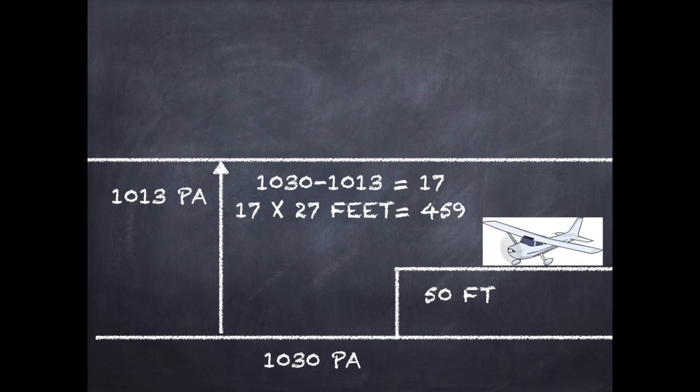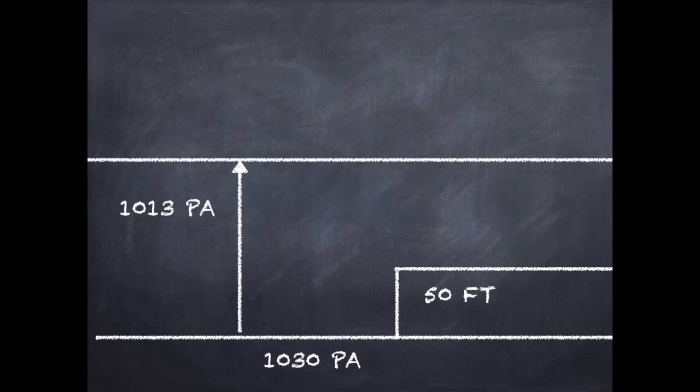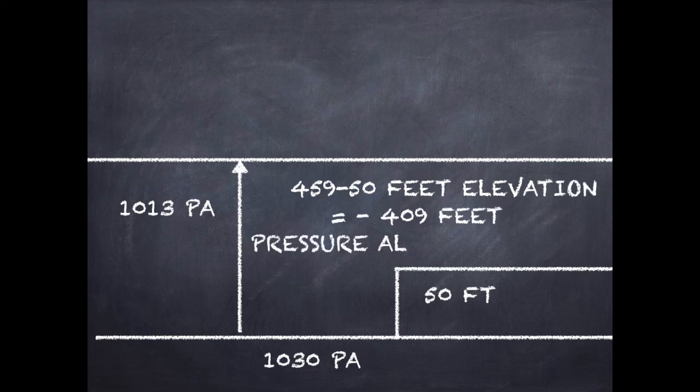So to find out the pressure altitude, you have to subtract the elevation of the airfield from 459, which comes to be 409 feet. This is your pressure altitude.